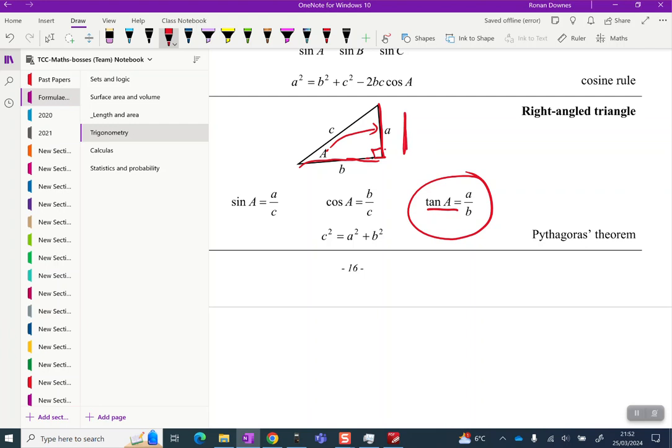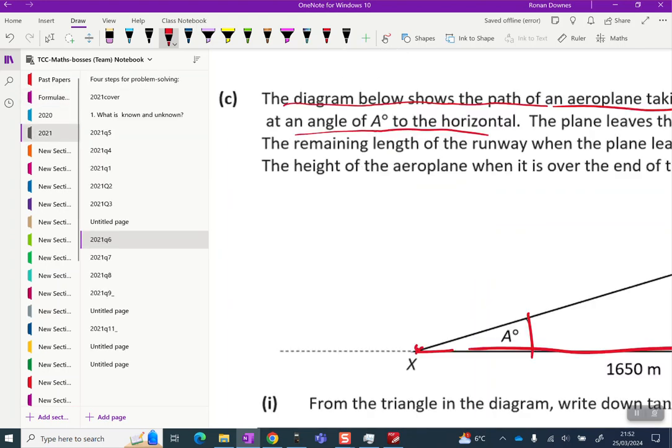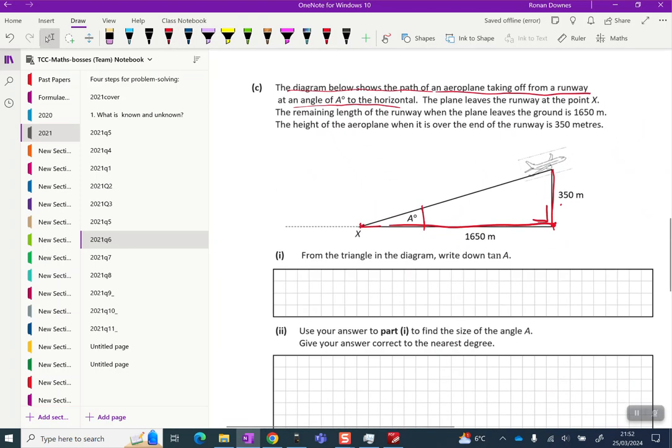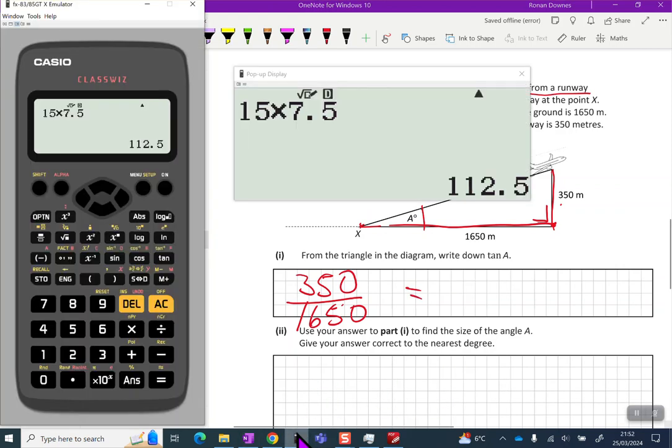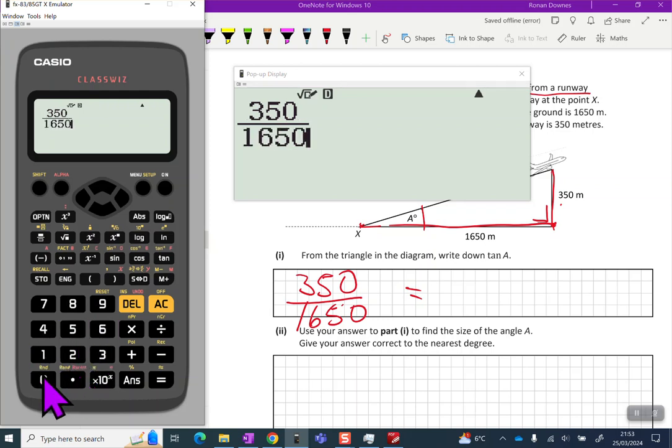This looks awfully like our picture in the question, so we can go back and take the rise which was 350 and take the run over there which was 1650. We put them together in our fraction. Writing down 350 over 1650, that's the correct expression for it. Now they may want us to simplify that, so we put that in our calculator and we get 0.21 recurring.